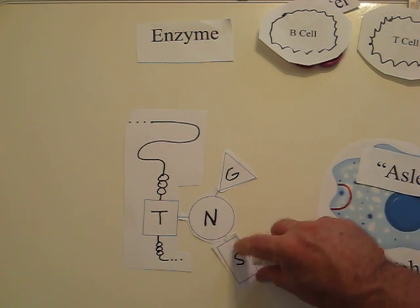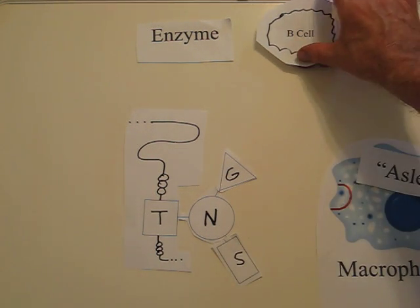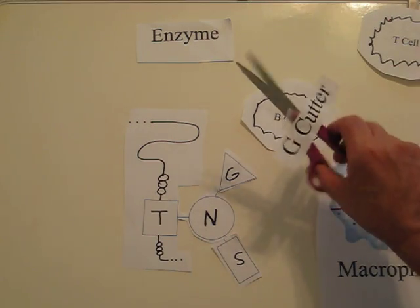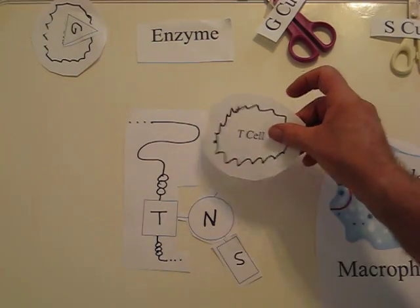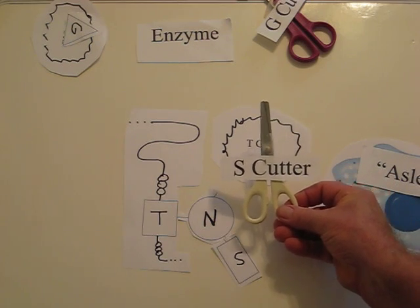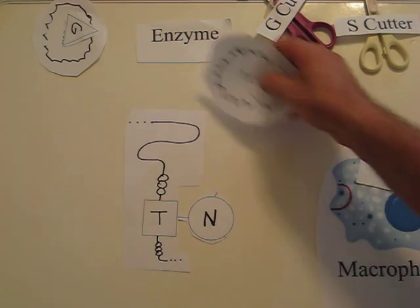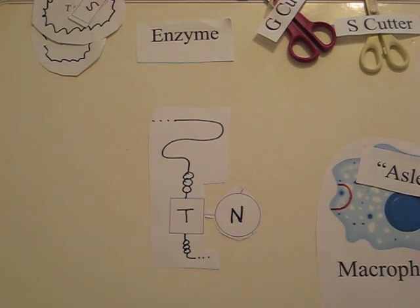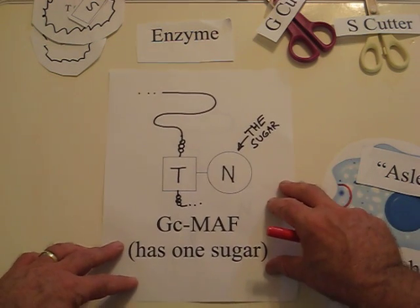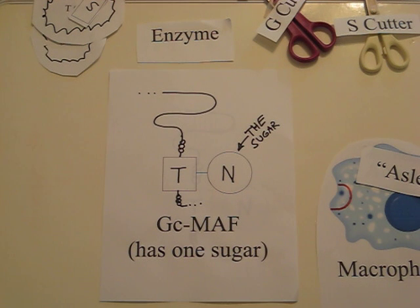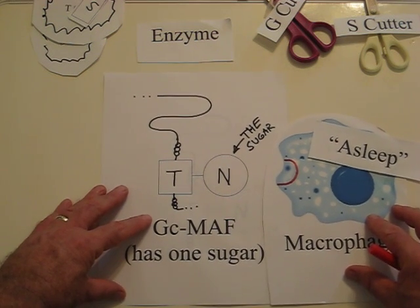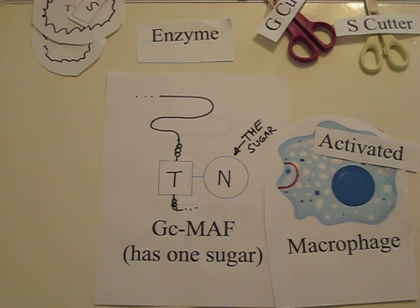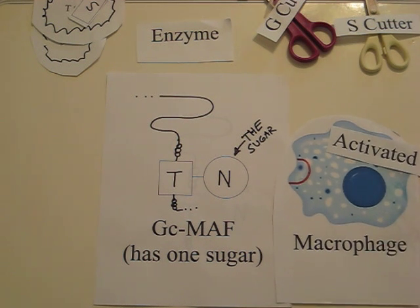Here again is that molecule. What happens when a B-cell comes along — it releases an enzyme, a G-cutter. It cuts this G-sugar off. Then a T-cell comes, and it uses an S-cutting enzyme, and it cuts the S off. Now what we're left with is the same molecule, but only one sugar. And that molecule now is GCMoth. It binds to a macrophage — it's basically asleep — and that binding activates it. The macrophage can now go out and fight infection.